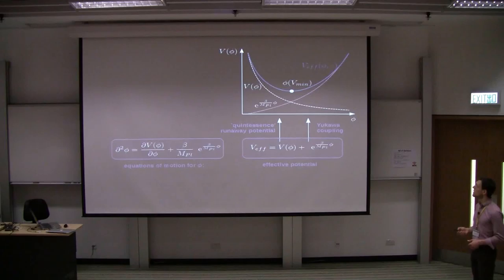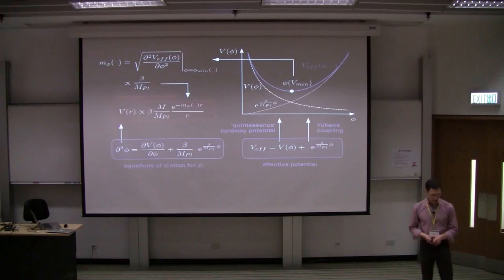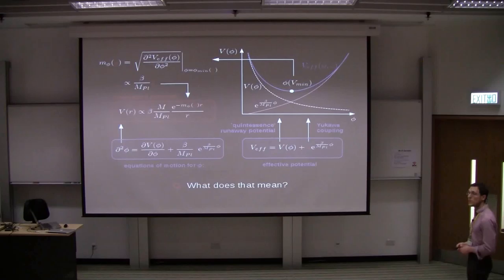This minimum depends on the actual density, because if the density is lower, then this is more shallow and the minimum is lower. Anyway, you can define from this minimum a mass for the field. This mass is also depending on the energy density. And finally, you can solve this to get a potential in space for this model. Well, okay. That's a lot of math. And what does that actually mean?